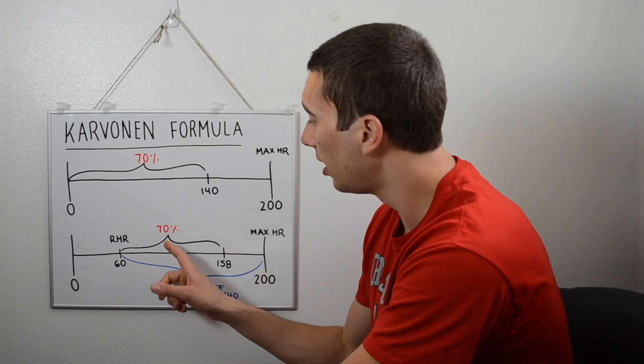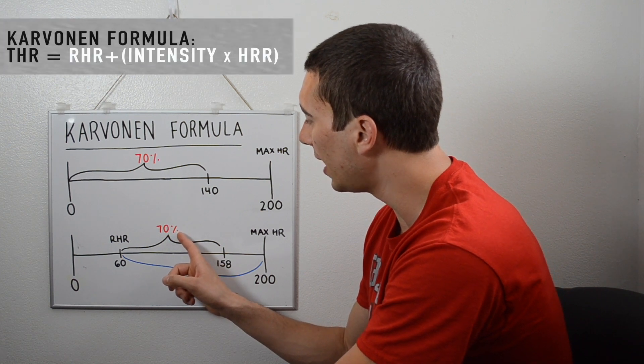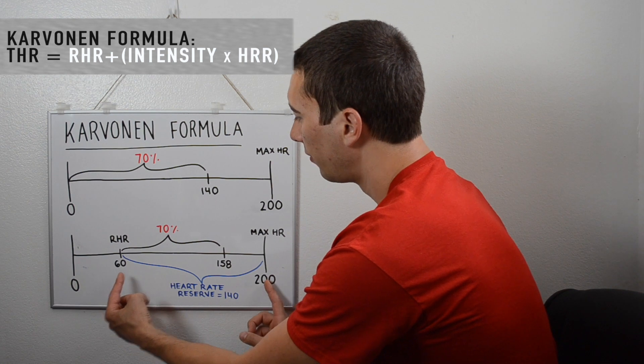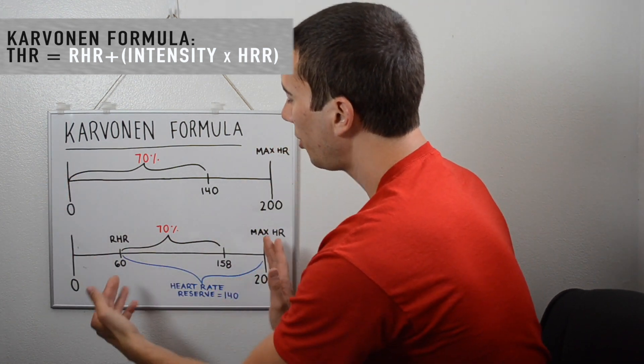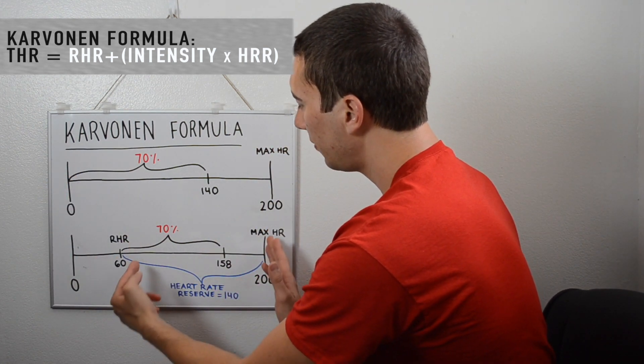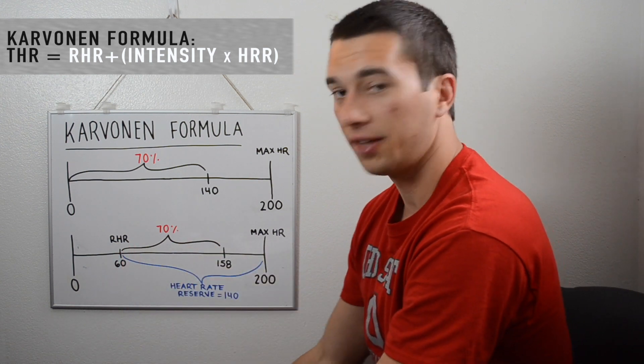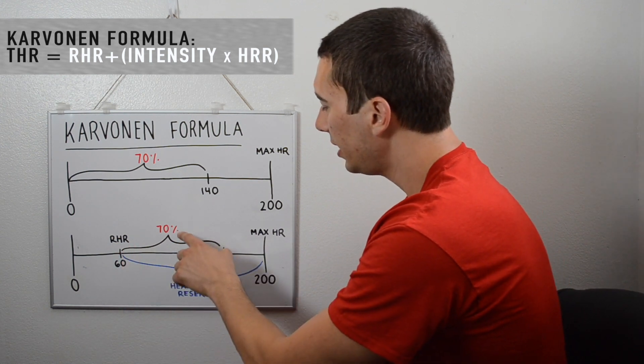Now, with the Karvonen Formula, we're going to take that 70%, that target intensity, and we're going to multiply it by the heart rate reserve. So instead of 70% of the whole thing, we have 70% just of the heart rate reserve. That is going to get us, and we'll look at the formula here in a second, but about 98 beats per minute.